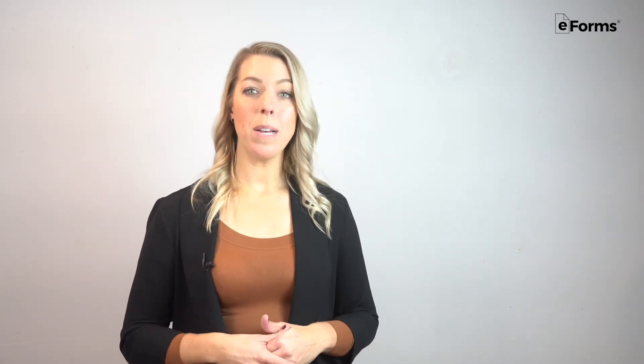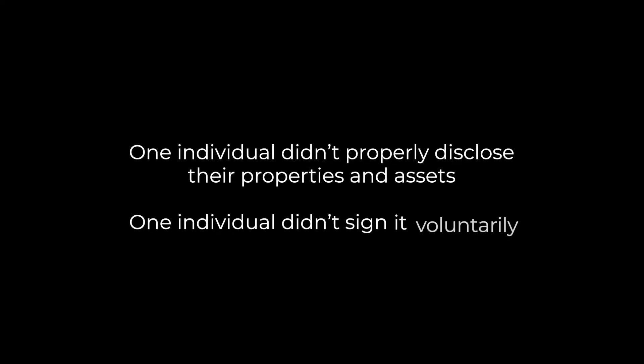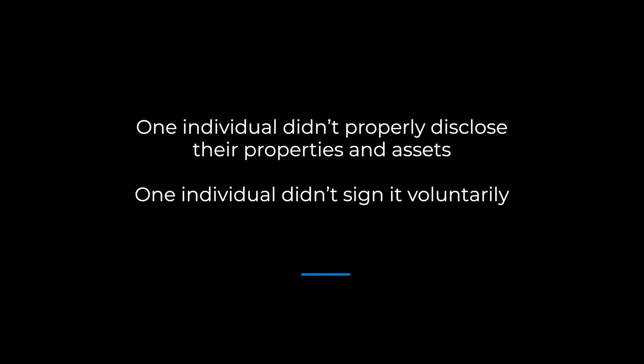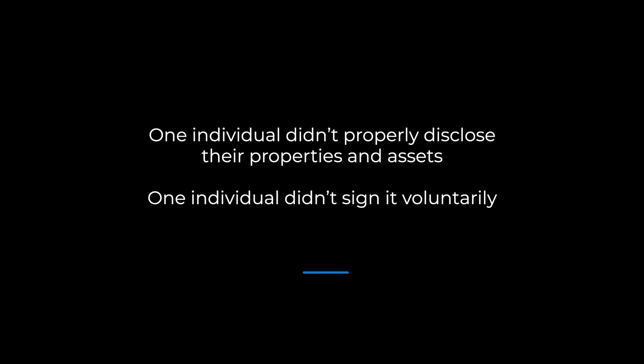There are plenty of reasons a prenup is considered invalid. A prenup can be overturned if both individuals sign an agreement that nullifies the prenup. If a marriage dissolves, so will an associated prenup. A prenup can also be considered invalid if one individual didn't properly disclose their properties and assets, or one individual didn't sign it voluntarily.